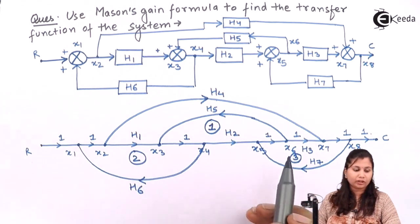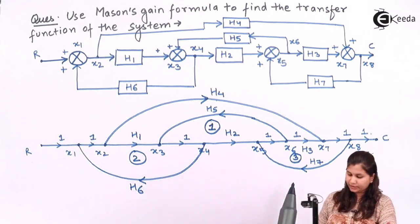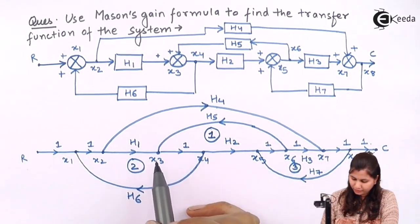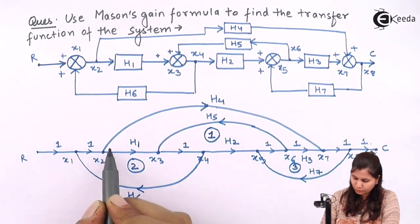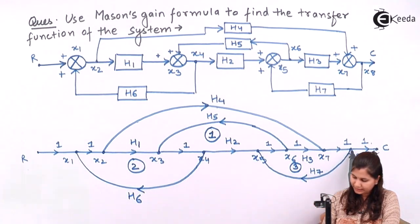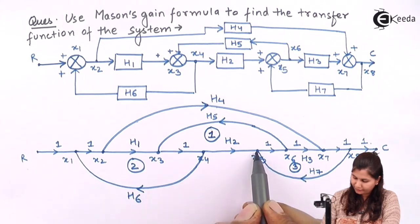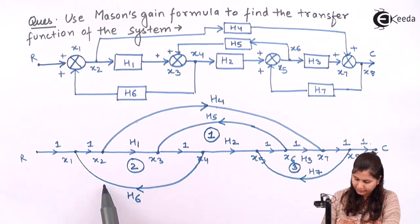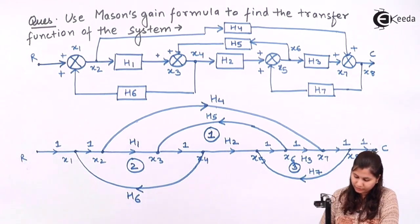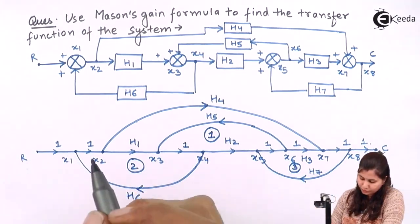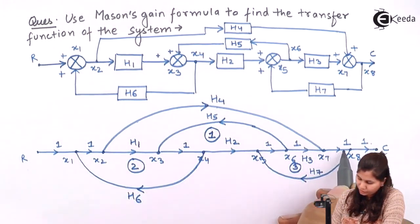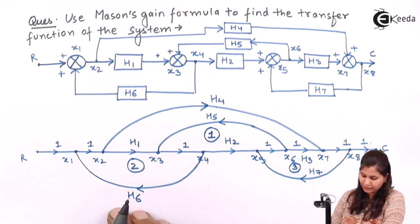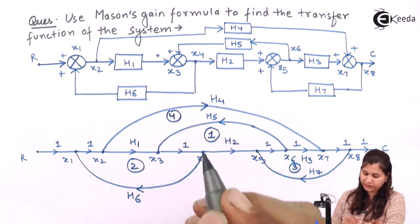There is also a fourth loop: X1, X2, X7, X8, then X5, X6, X3, X4, back to X1, with gain H4·H7·H5·H6. So there are 4 loops in this system.